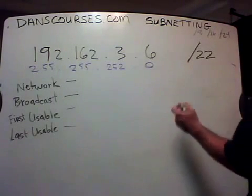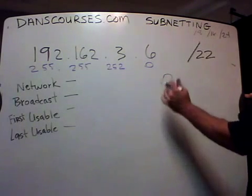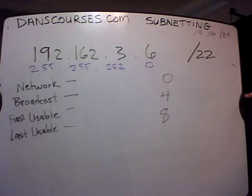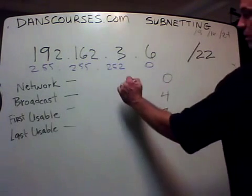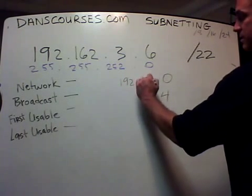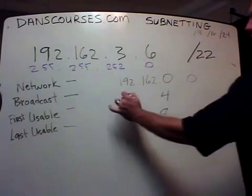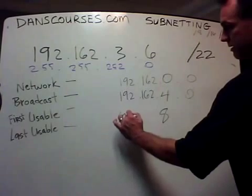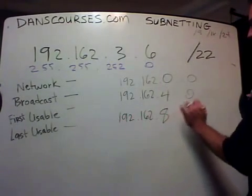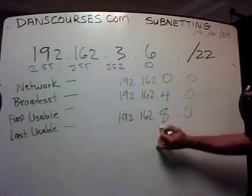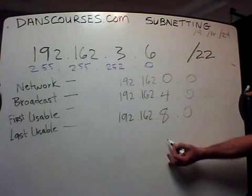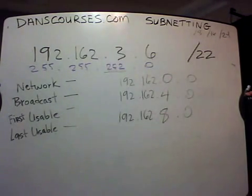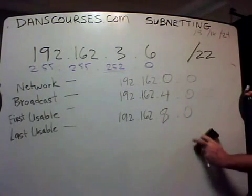The networks go up by 4. So that means that the first network is 0, the next network is 4, the next network is 8. But this is where it gets a little tricky. That means 192.162.0.0. 192.162.4.0 is the next network. 192.162.8.0 is the network. In other words, the networks go up by 4 in the third octet.